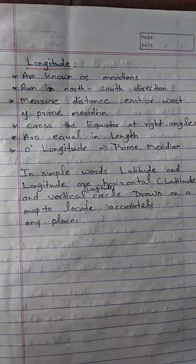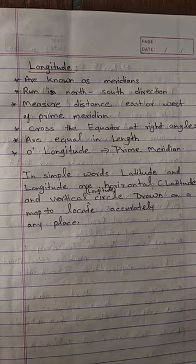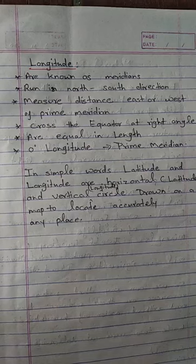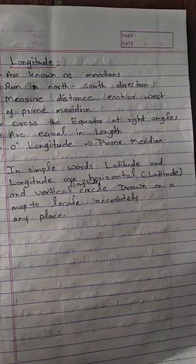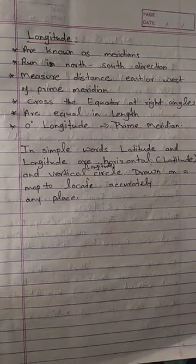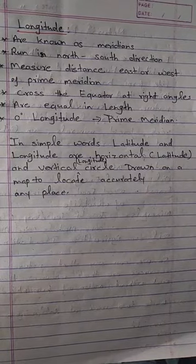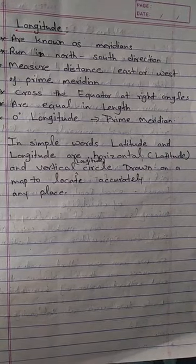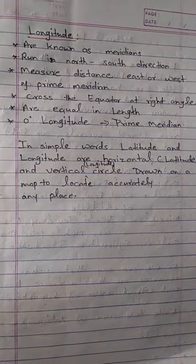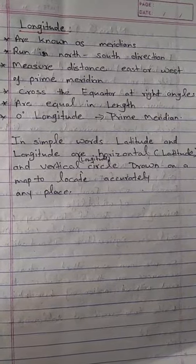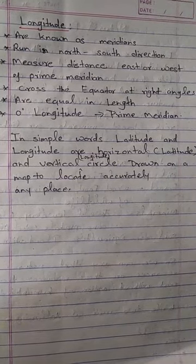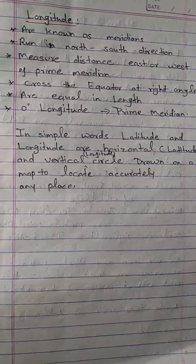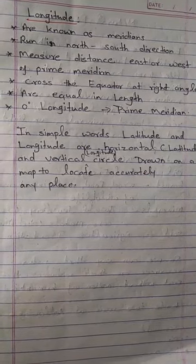Longitudes cross the equator at a right angle and they are all equal in length. In simple words, latitudes and longitudes are horizontal and vertical imaginary lines drawn on a map to locate any place accurately. Your homework is to differentiate between longitude and latitude. I hope the topic is clear now.